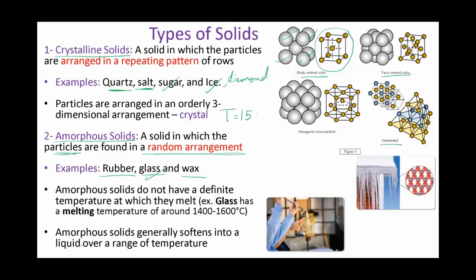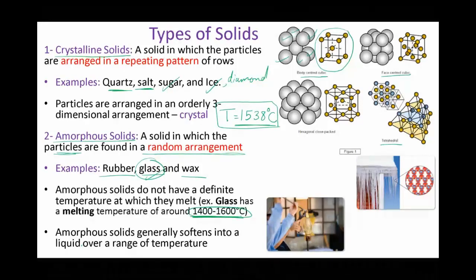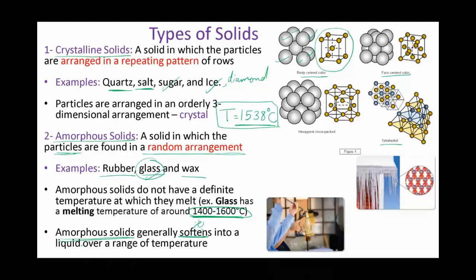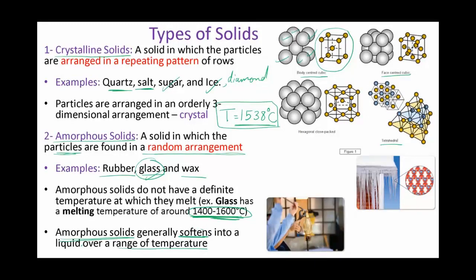So for iron, it's an exact, definite number — that's the melting point. But for glass, for example, there is no certain temperature. It has a range of temperatures over which glass melts down. So there is no definite temperature — the amorphous solids soften into liquid over a range of temperature. If you increase the heat, it will turn into a liquid.